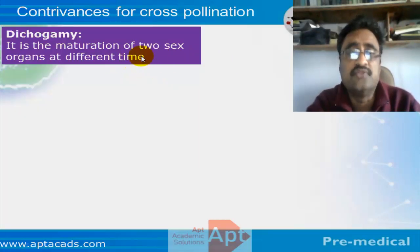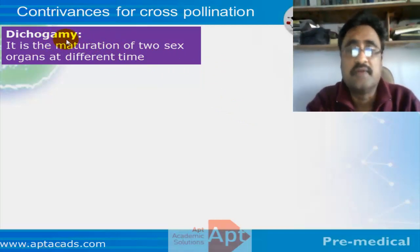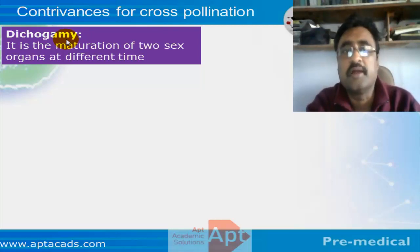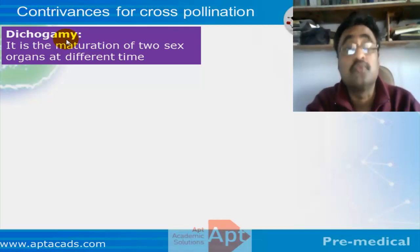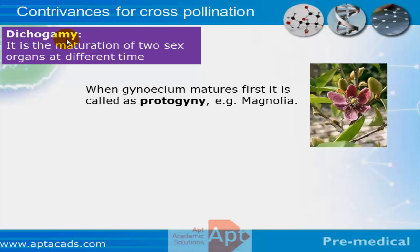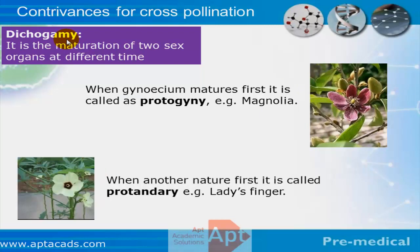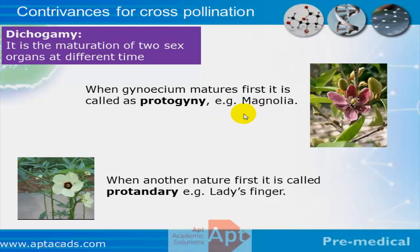The second feature is dichogamy. In dichogamy, the maturity of the sex organs happens at two different times. There are two possible cases: one in which the male plant develops first, and another in which the female plant develops first. When the male develops first, we call it protandry — typically observed in lady's finger flower. When the female develops first, we call it protogyny — magnolia is the typical example.